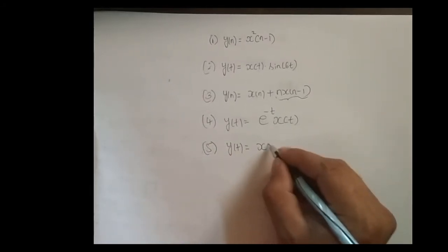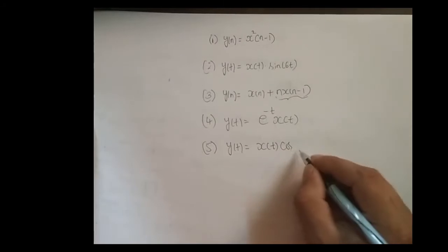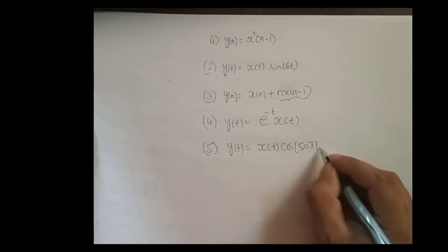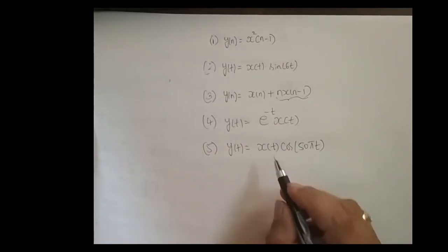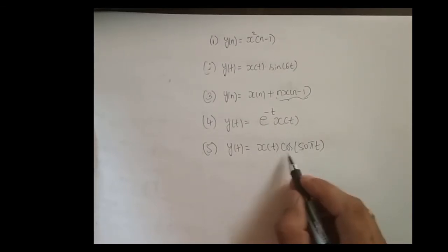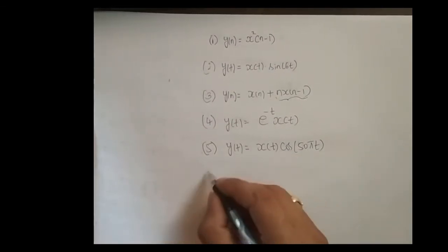Y(t) = x(t)cos(50πt). Here, for the input signal x(t), cos(50πt) is getting multiplied.